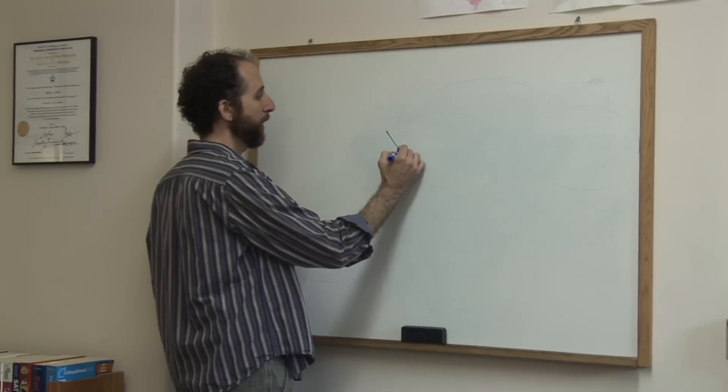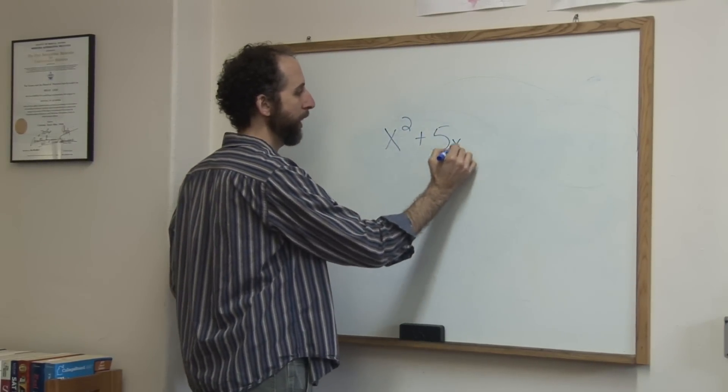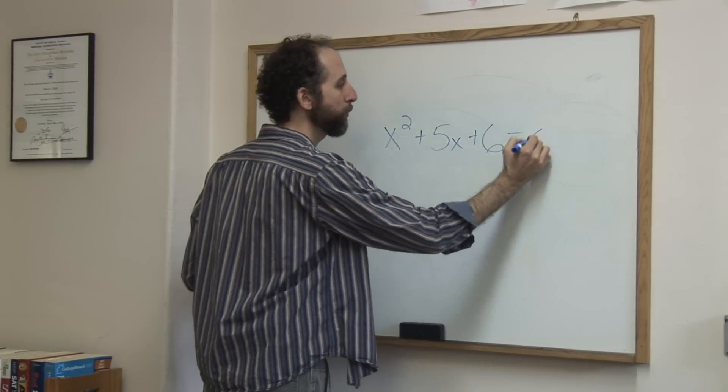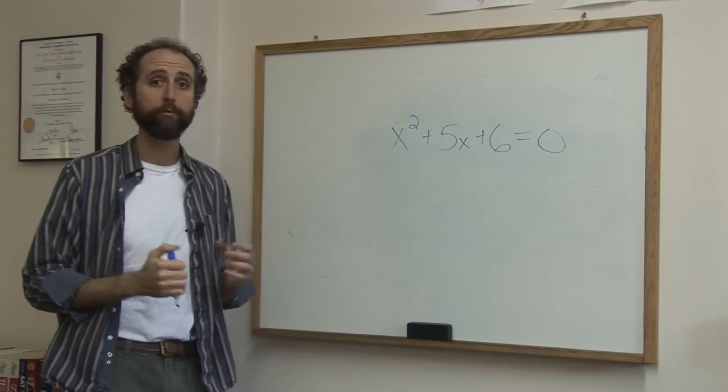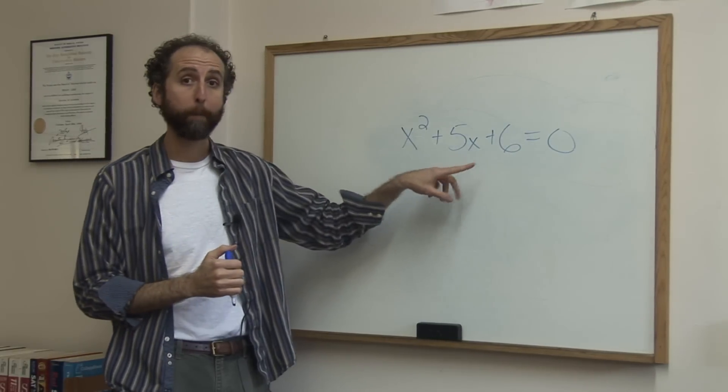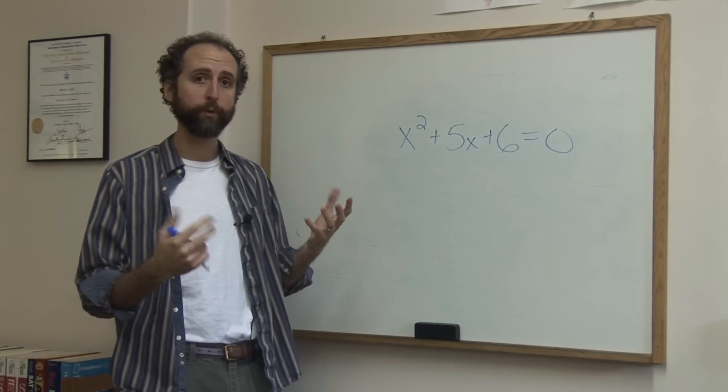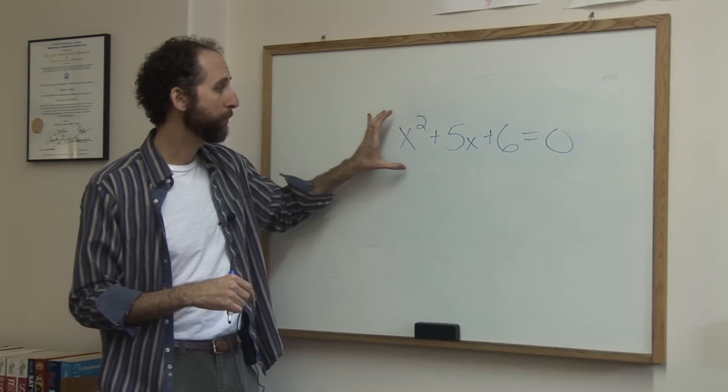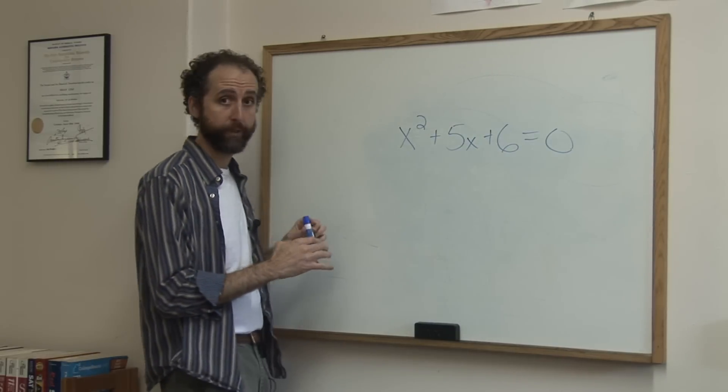So if we had x squared plus 5x plus 6 equals 0, and we want to solve this quadratic polynomial equation. Again, fancy words, quadratic just means squared, polynomial means there's several terms.